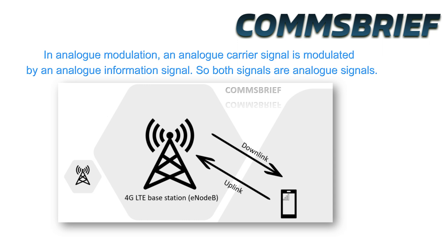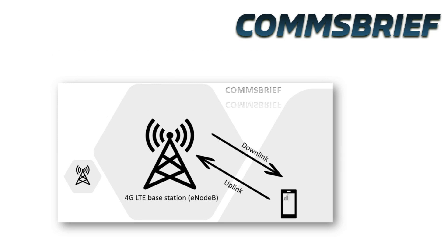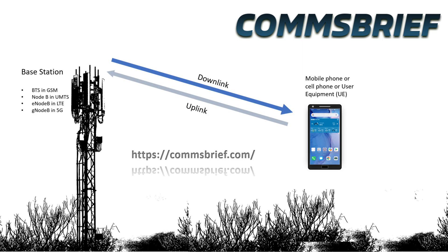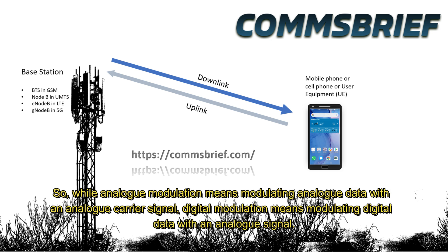Analog modulation is essential — without it, you cannot use radio waves to communicate any data at all. In analog modulation, an analog carrier signal is modulated by an analog information signal. Mobile networks are digital, but as soon as any communication goes out into the air, it has to be converted into analog signals, because radio waves are analog and this physical world is analog. Base stations have digital-to-analog converters, and mobile phones have analog-to-digital converters. So while analog modulation means modulating analog data with an analog carrier signal, digital modulation means modulating digital data with an analog signal.